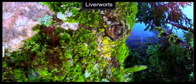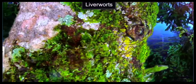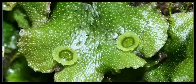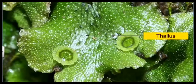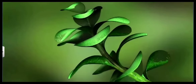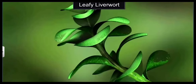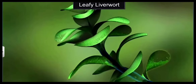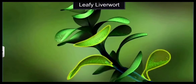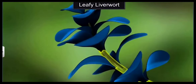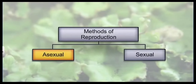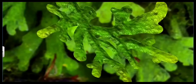Liverworts are the lower bryophytes. They are primitive bryophytes where the body is a typical thallus which is dorsiventrally branched. Sometimes, some leaf-like structures may also be present in leafy liverworts. These leaf-like structures have a small stem which is not a true stem — it is a false stem.